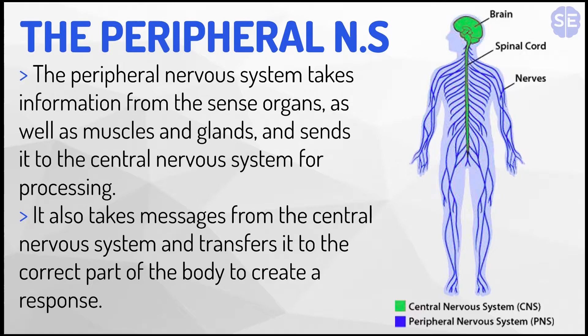The peripheral nervous system takes information from the sense organs, as well as muscles and glands, and sends it to the central nervous system for processing. It also takes messages from the central nervous system and transfers it to the correct part of the body to create a response.